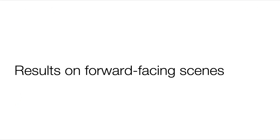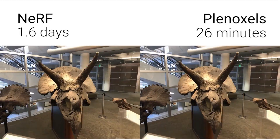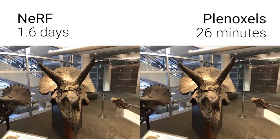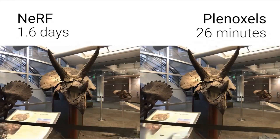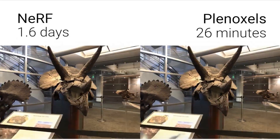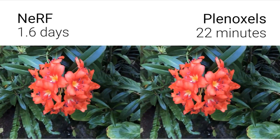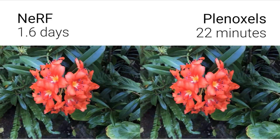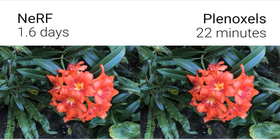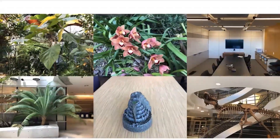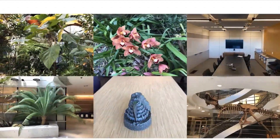Planoxels can also model unbounded forward-facing scenes using a voxel grid warped by normalized device coordinates, the same transformation used in NeRF for these scenes. Normalized device coordinates effectively reallocate the resolution of our voxel grid, allowing for high resolution in the foreground and low resolution further away. Although high resolution produces accurate and detailed 3D planoxel models, it does come at a cost in terms of memory. However, there are many methods of compressing a planoxel grid while retaining its high fidelity and fast optimization.